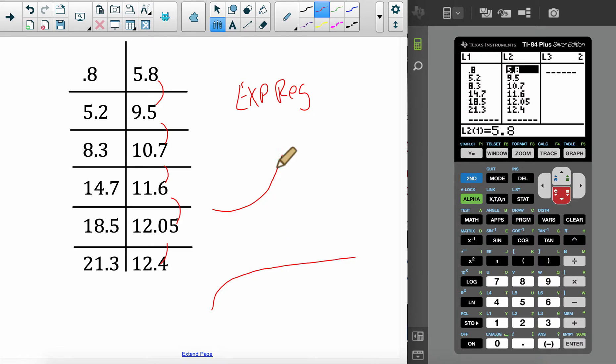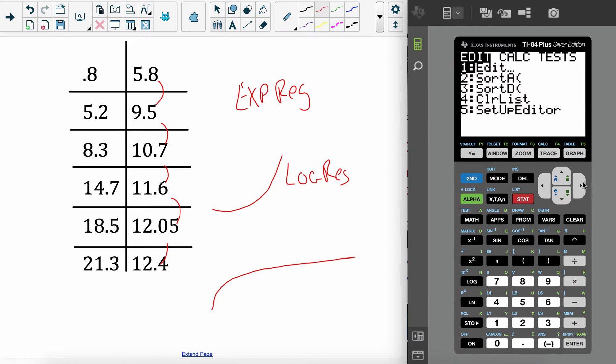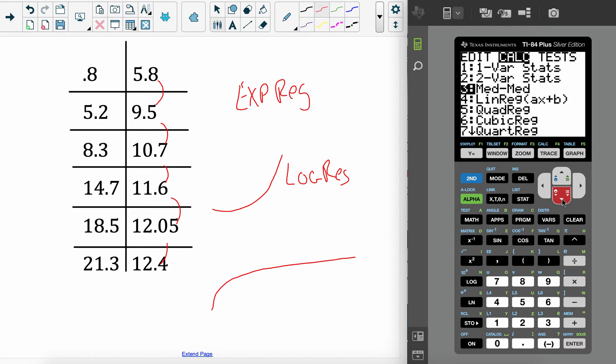So we need to do a logarithmic regression. So let's go to the stat edit. Oh excuse me, stat calc. So here we are in calc. Let's go down and find one that works. Linreg, that's a straight line. Quadratic, cubic, quartic, different version of a line.